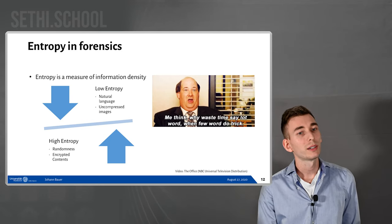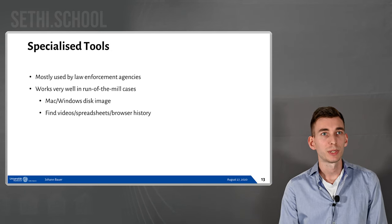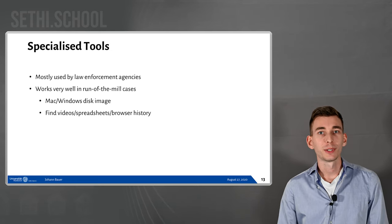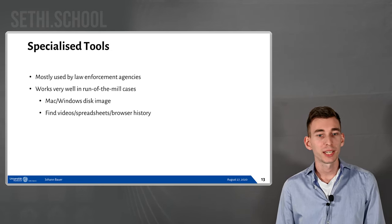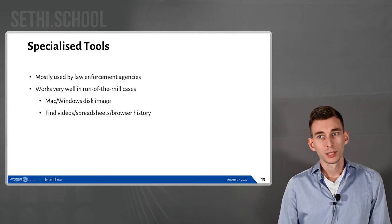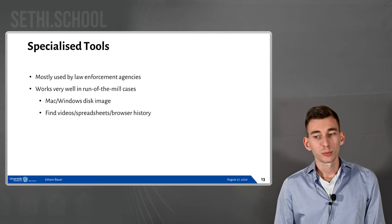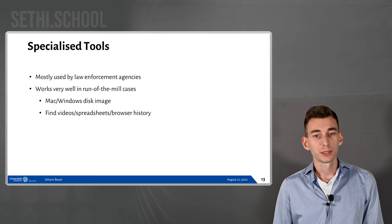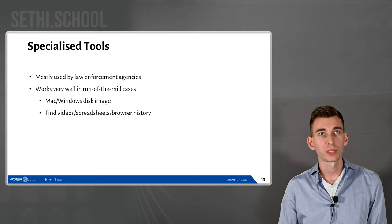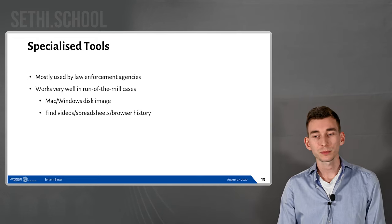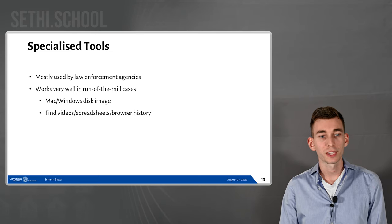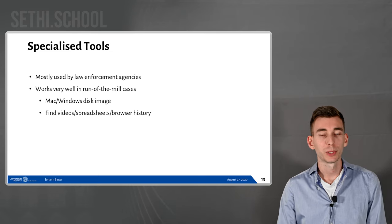There are specialized tools primarily used by law enforcement agencies because they have very similar cases every day. They often have an image of a Mac or Windows computer and want to find images, spreadsheets, or similar files, and the easy parts of that can be automated. But if you want to do more thorough investigation — for example, finding key material — you would still have to put some manual work into it.